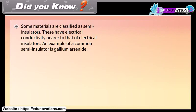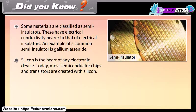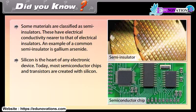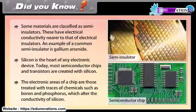Did you know? Some materials are classified as semi-insulators, having electrical conductivity nearer to that of electrical insulators. An example of a common semi-insulator is gallium arsenide. Silicon is the heart of any electronic device — today most semiconductor chips and transistors are created with silicon. The electronic areas of a chip are those treated with traces of chemicals such as boron and phosphorus, which alter the conductivity of silicon.